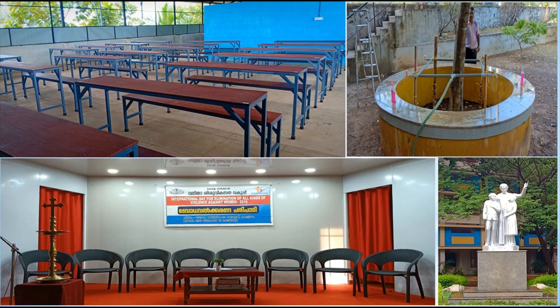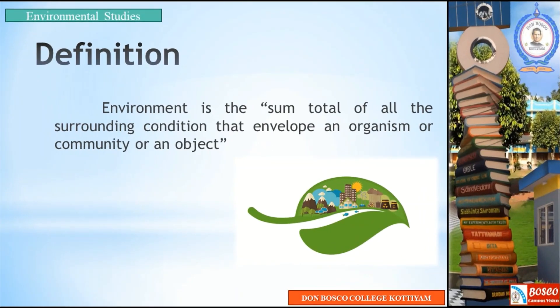So in the environment, it is our surroundings. If we look at the environment, it is simpler — it is what we see around us. Now let us look into the definition of environment. Environment is the sum total of all the surrounding conditions that envelop an organism, community, or an object. All the objects in our college campus — the surroundings — we call them environment.